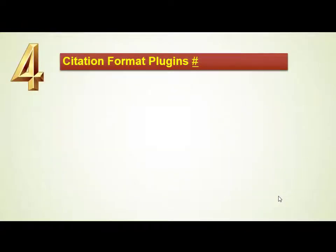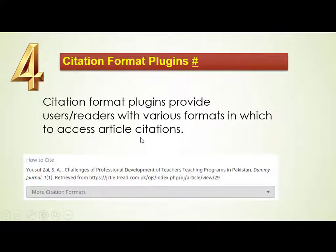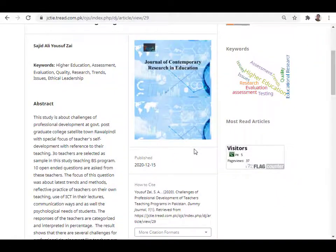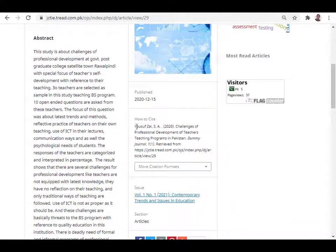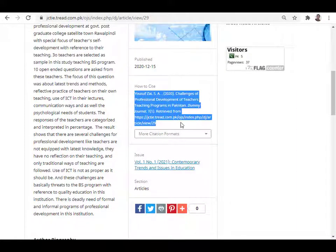The fourth plugin is the Citation Format plugin. This is very useful because many scholars — including MPhil and PhD students and faculty members — have difficulty formatting citations. The Citation Format plugin provides readers with various formats in which to access article citations. If a reader finds an article in your journal, they can simply copy the citation and paste it directly into their reference list, which will also increase journal citations.